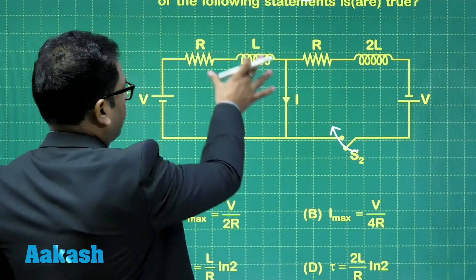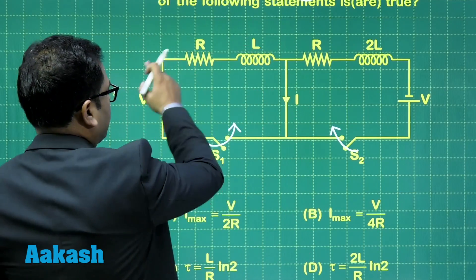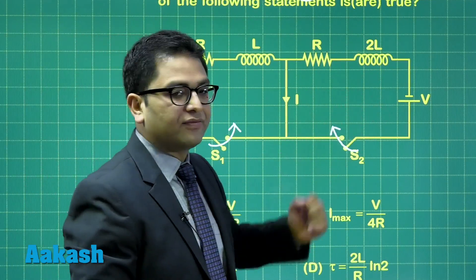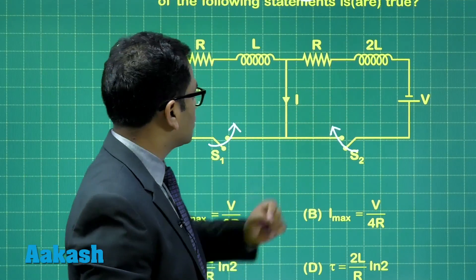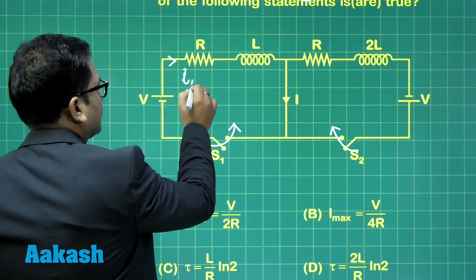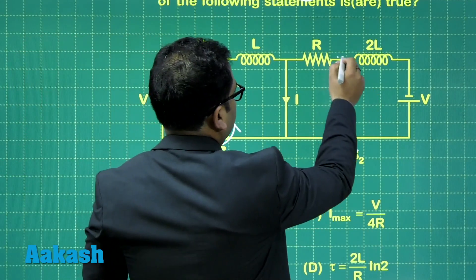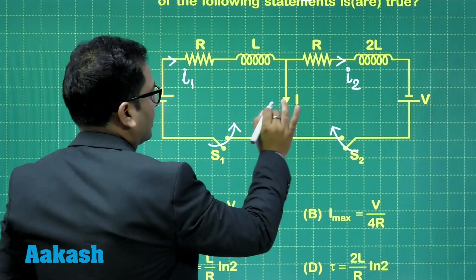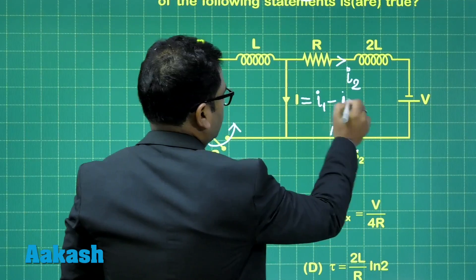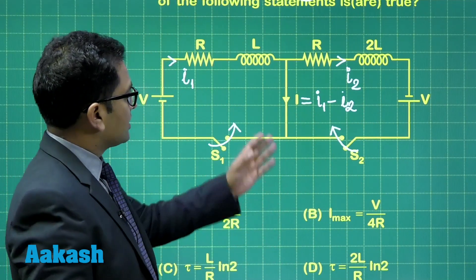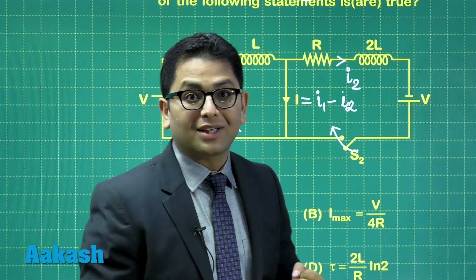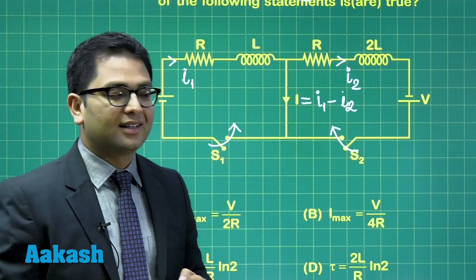Notice one thing: this circuit is an independent RL circuit with EMF V, and this is an independent RL circuit with EMF V. But here, remember, the inductance is 2L. If this is I1, quite obviously, this would be I2. So it's very simple. This I is going to be I1 minus I2. We need to analyze at what time will I be maximum and what is the maximum value of I.